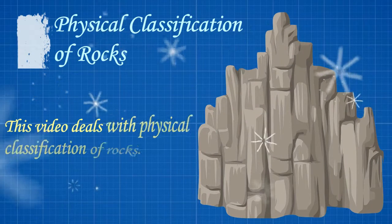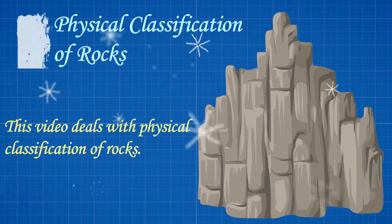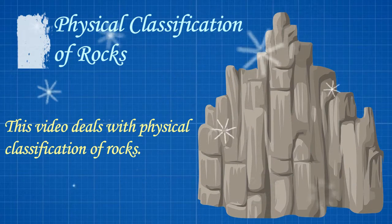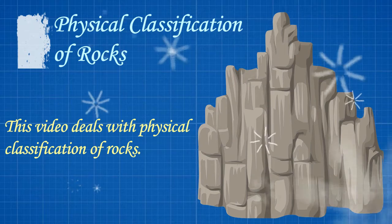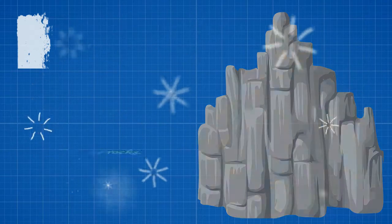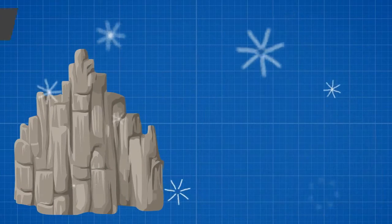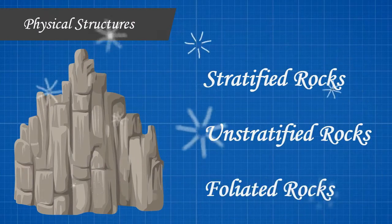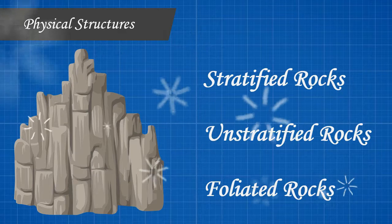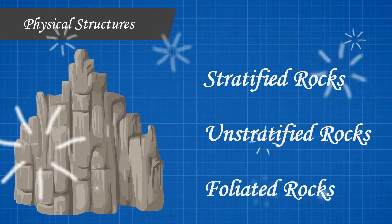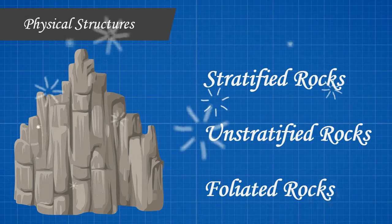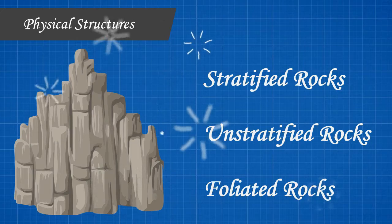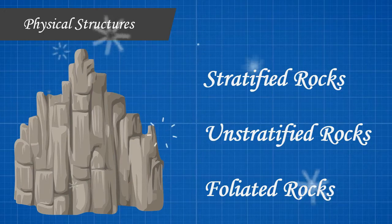This video deals with physical classification of rocks. Based on the physical structures of rocks, the rocks are classified into stratified rocks, unstratified rocks, and foliated rocks.